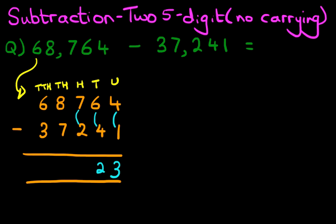Hundreds column, 7 minus 2. That's right, it is 5.